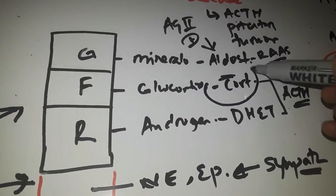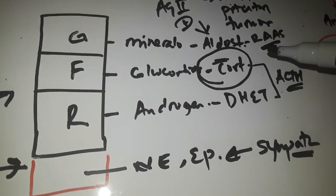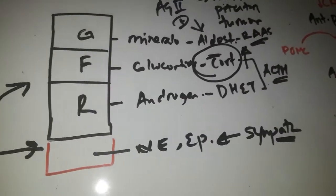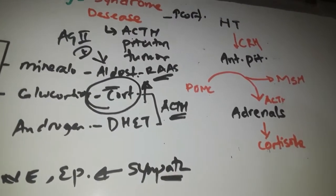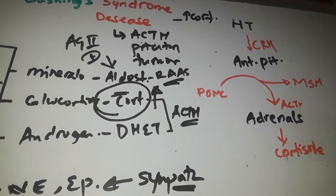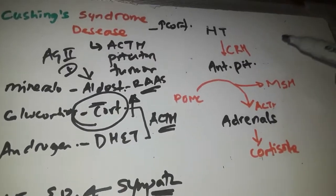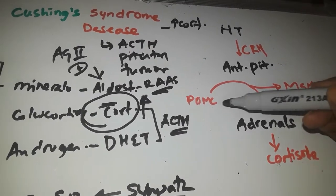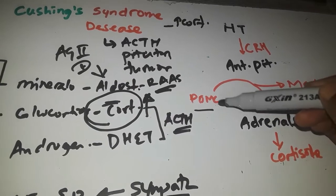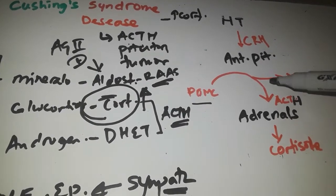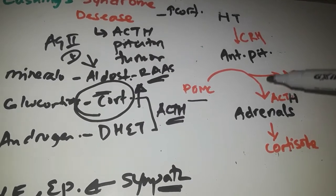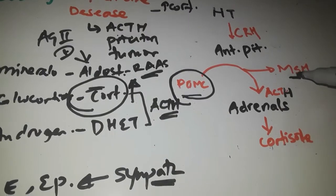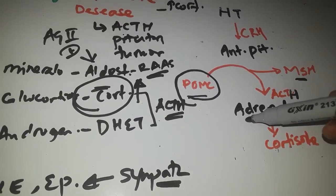Let's talk about increased production of cortisol and the symptoms we see in Cushing's syndrome. The hypothalamus releases corticotropin-releasing hormone (CRH), which stimulates the anterior pituitary to make more ACTH. ACTH is made from a substrate called pro-opiomelanocortin (POMC), which also produces melanocyte-stimulating hormone. ACTH then stimulates the adrenal cortex to make more cortisol.